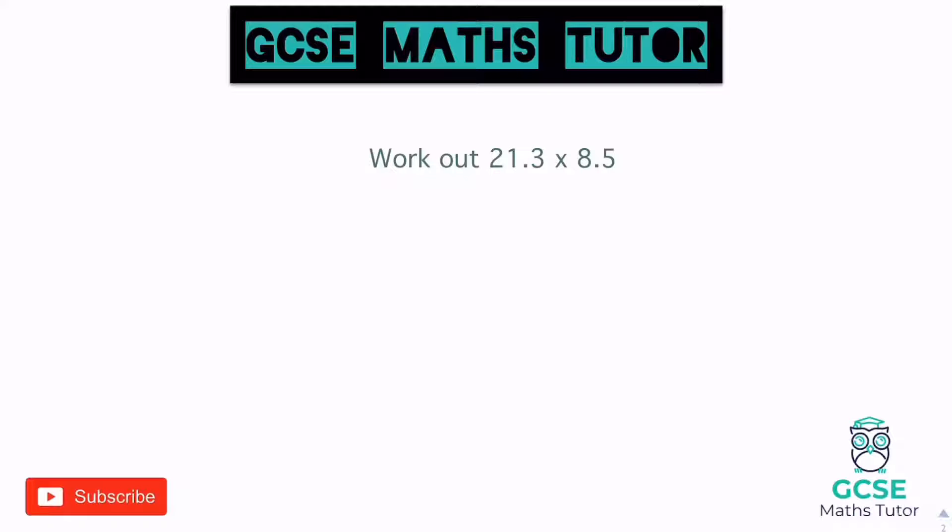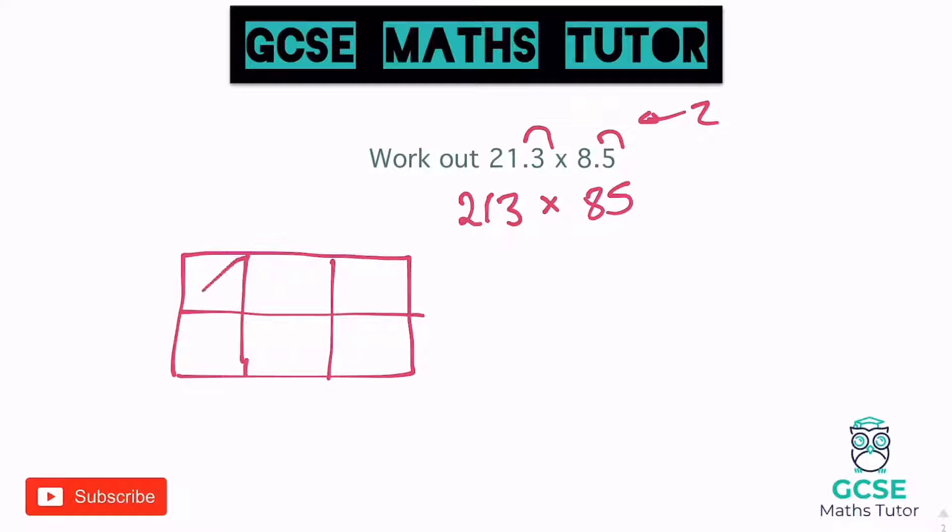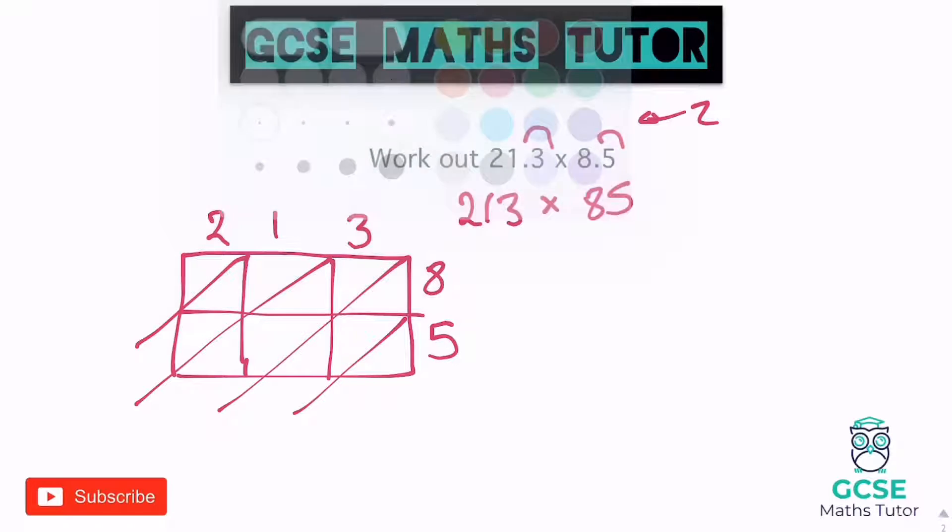Okay, 21.3 times 8.5. It's going to be the same process here. Let's take a decimal out of this one to make it 213. And a decimal out of 8.5 to make it 85. So again, two hops there that we need to put back in at the end. Let's make a little grid for this one then. So 213. So I'm going to have to have three digits, I'm going to put those along the top. And I've got two down the side. So again, setting that up. So 213, 85. Let's go about multiplying these.